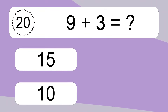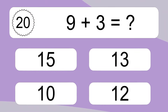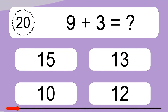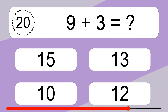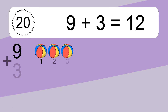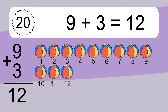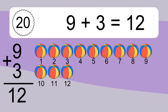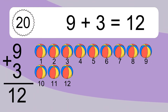Nine plus three equals what? Nine plus three equals twelve. Let's count it: one, two, three, four, five, six, seven, eight, nine, ten, eleven, twelve.